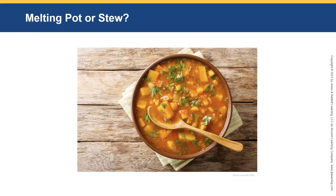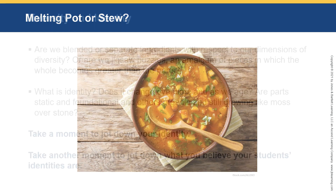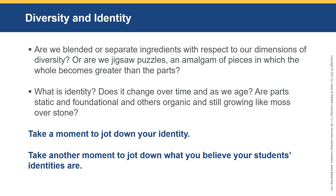Are we a melting pot or a stew? That picture shows us as different but all in the same bowl. Are we blended or separate ingredients with respect to our dimensions of diversity? Are we a jigsaw puzzle — an amalgam of pieces in which the whole becomes greater than the parts? What is identity? Does it change over time as we age? Are parts of us static and foundational while other parts are still growing? Take a moment to jot down your identity, and then what you believe your students' identities are.